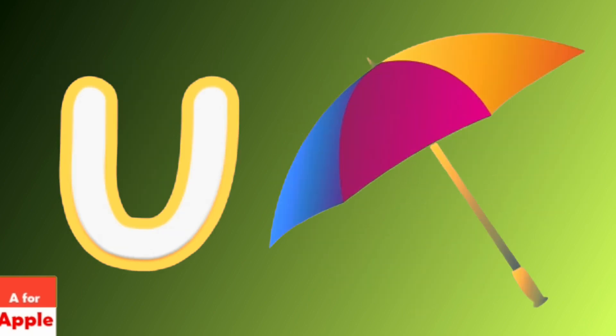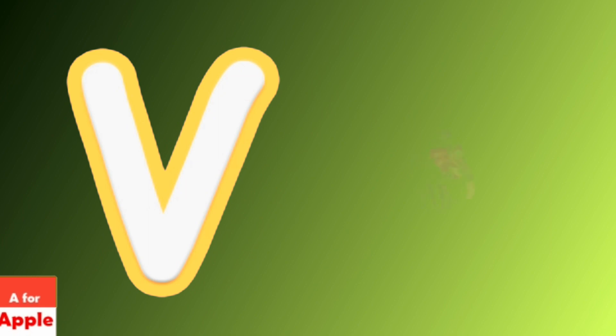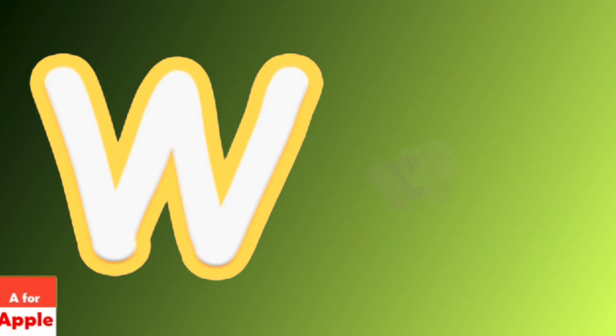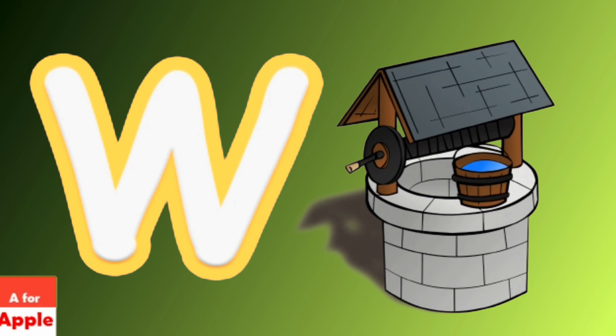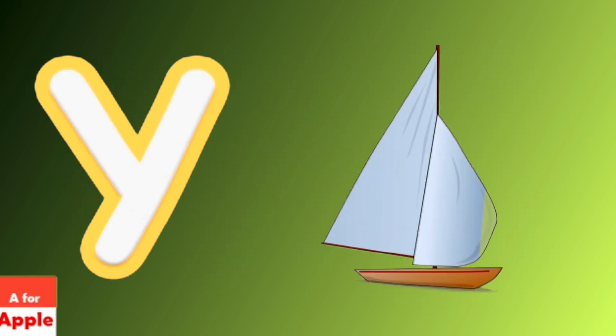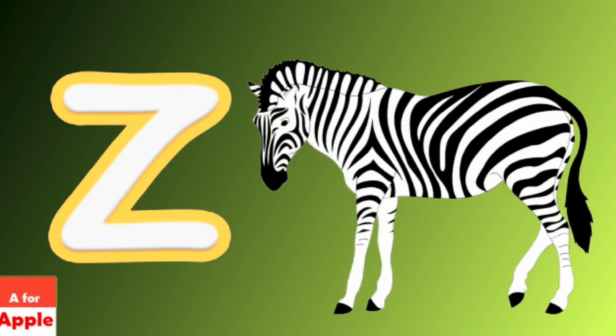U for umbrella, umbrella. V for vegetables, vegetables. W for well, well. X for X mastery, X mastery. Y for yacht, yacht. Z for zebra, zebra.